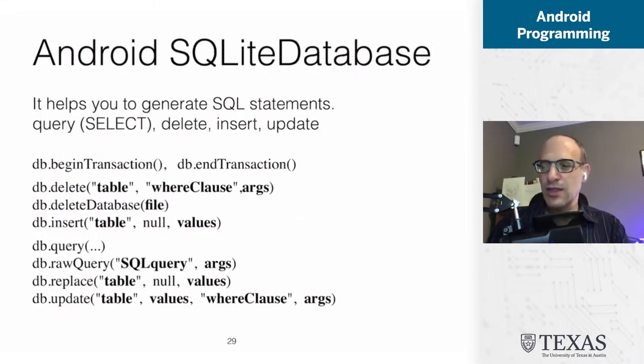So the database object in Android allows you to specify where the database is. It allows you to do operations on the database, and in this case, these are sort of raw operations where you can just provide the text for your SQL queries. But then there are also these more abstract delete, insert, replace, and update operations, which correspond to your SQL operations. And we want to see how to use them and how to use them safely.